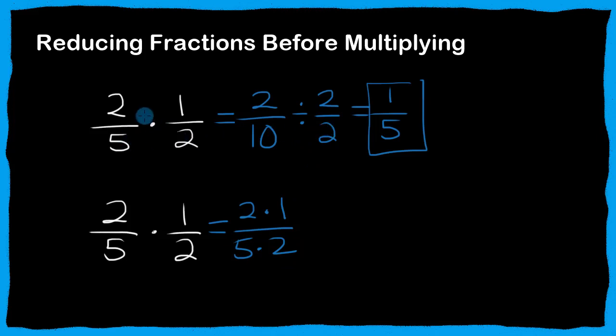We're multiplying it across right here. We're going to put these in the same fraction. Now, if you see the two on the top and the two on the bottom, because we're multiplying, we can actually reduce the two and the two to one over one, and now we're just multiplying one times one is one, five times one is five, and you can see we got one-fifth, and we can do that in a single step.